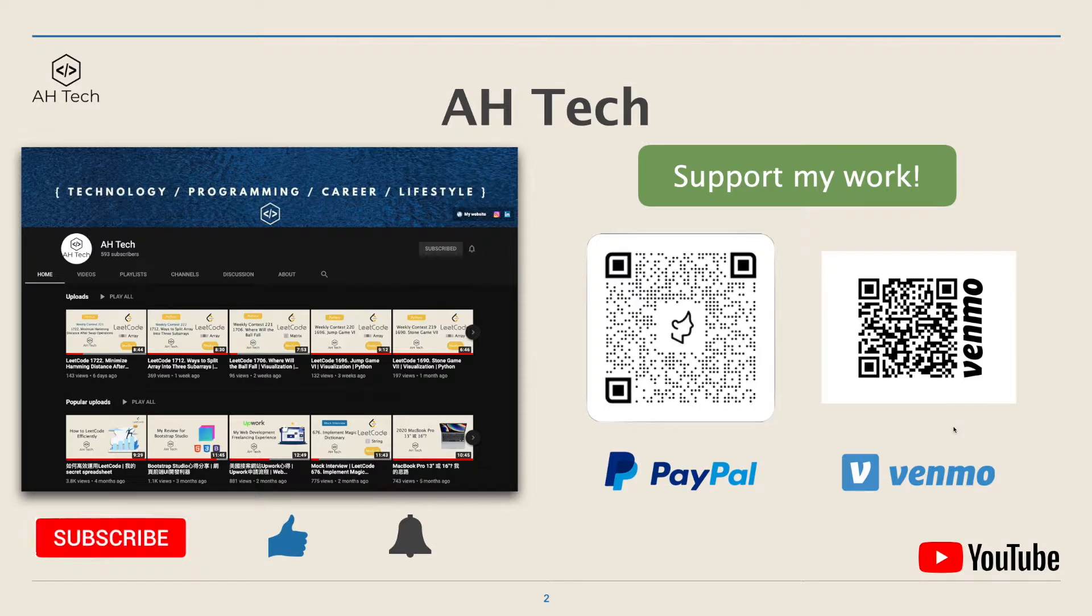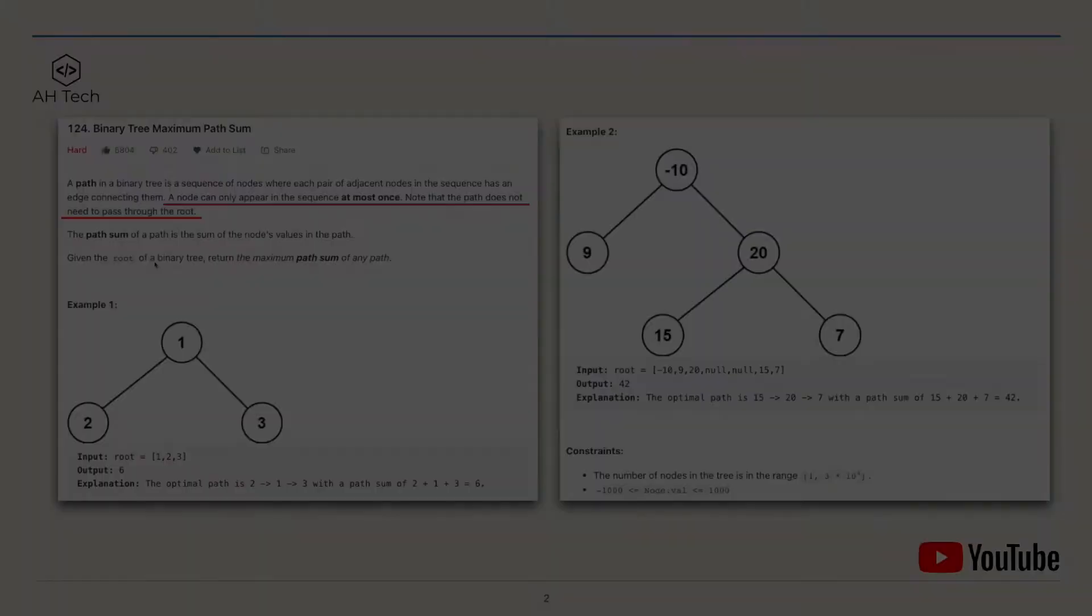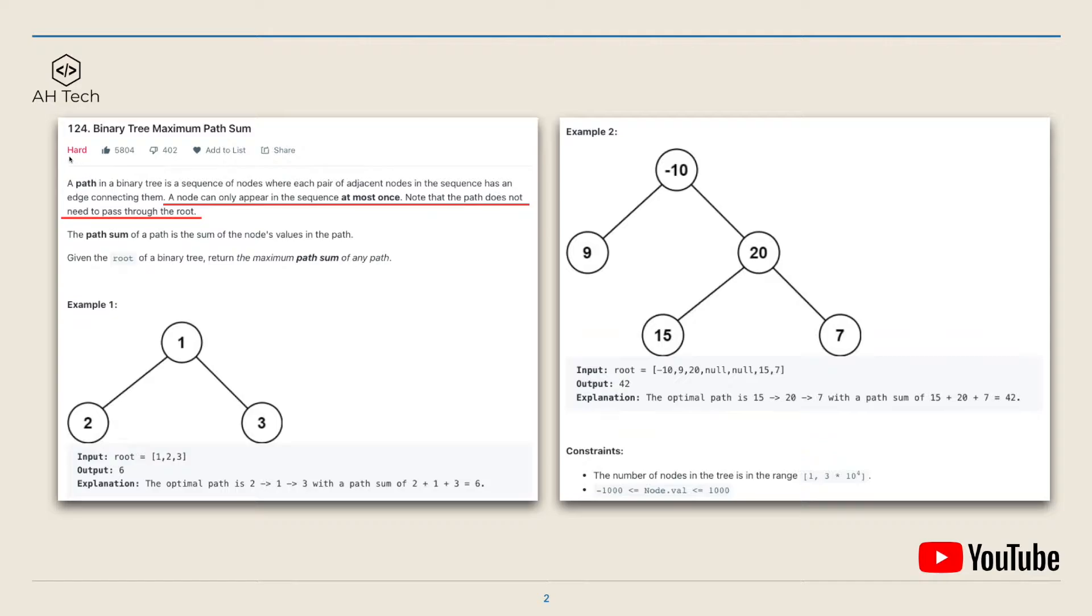Now let's look at the question. In this question we are given a binary tree and here we define a path in a binary tree as a sequence of nodes where each pair of adjacent nodes in a sequence has an edge connecting them. And here is a key condition: a node can only appear in a sequence at most once, and note that the path does not need to pass through the root of a tree. And a path sum of a path is the sum of all the nodes values in that path.